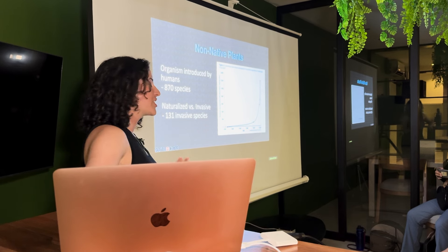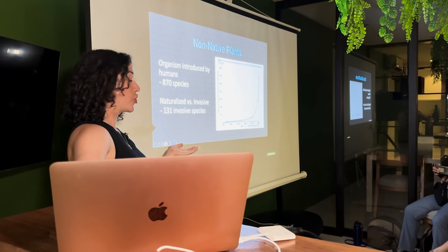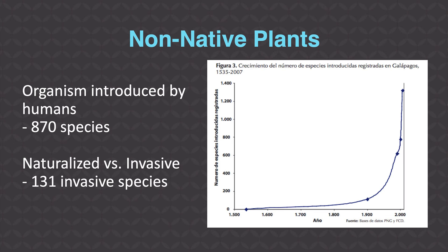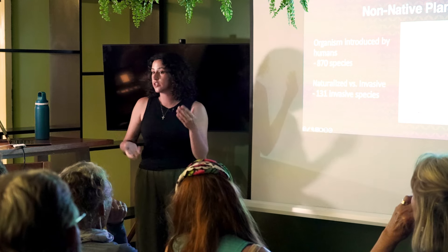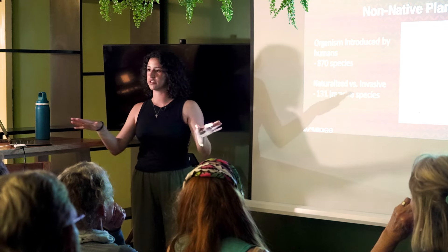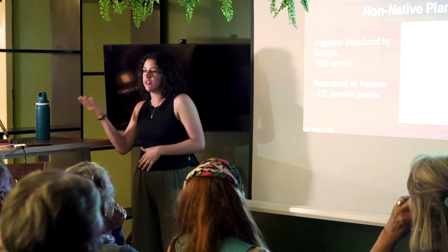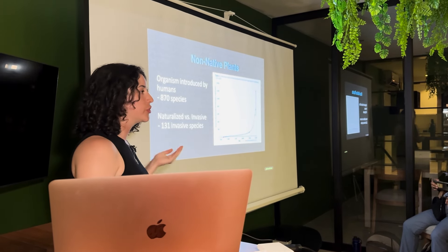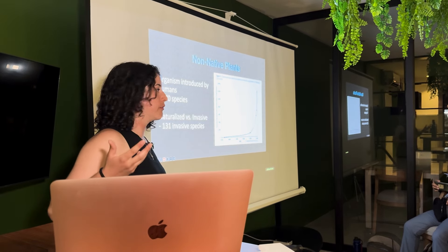In contrast to native plants, we have non-native plants. Non-natives are classified as organisms introduced by humans. In the Galapagos, there are about 870 species of non-native plants — many more than native plants currently. Two further definitions: naturalized plants are non-native plants that have been introduced but are not causing harm to native species; they've become part of the ecosystem. Invasive plants are classified as harmful to the environment — decreasing native populations and hurting other native organisms.